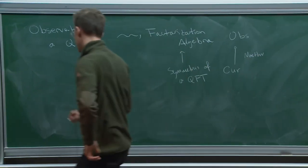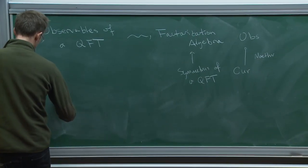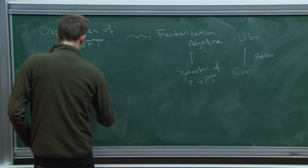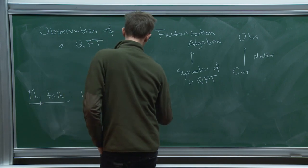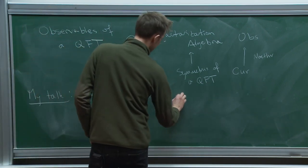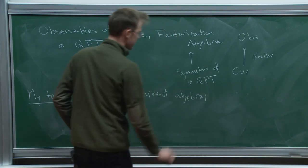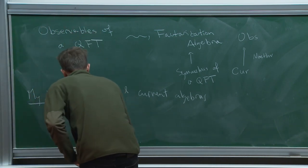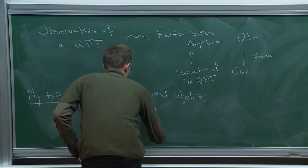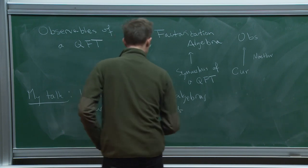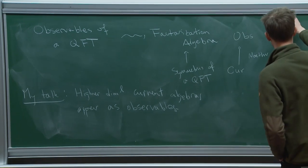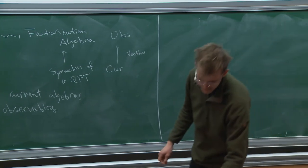In my talk today, I'm going to show how these higher dimensional current algebras — which we choose to represent as factorization algebras most of the time — actually appear themselves as the observables of some quantum field theory. I'd like to distinguish this from their appearance in the previous talk, in which they appeared as actual symmetries. Now I'm saying they appear as honest observables of a quantum field theory, and I'm going to focus on a very specific example while hoping to give a general picture as well.